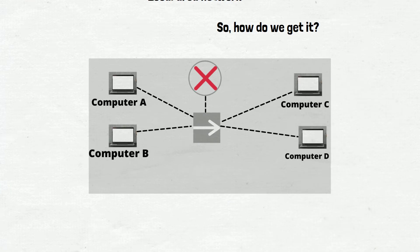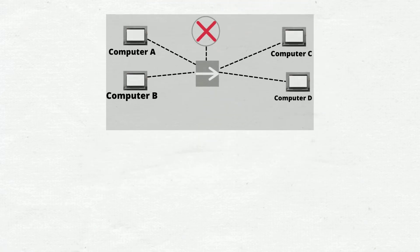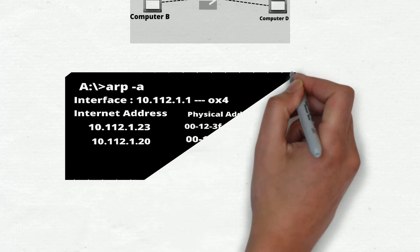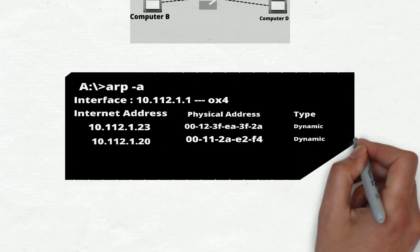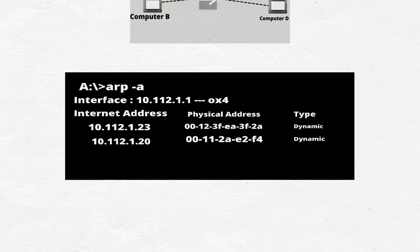Let's take an example. You have four devices on your local area network: Computer A, Computer B, Computer C, and Computer D. Computer A wants to talk to Computer C. It has Computer C's IP address but not its MAC address. So ARP sends a broadcast. When Computer B and D receive the packet, they simply drop it because it's not meant for them. When Computer C receives the packet, it accepts it and replies back to Computer A with its MAC address.